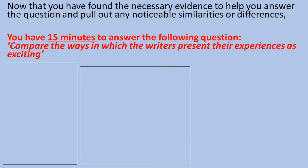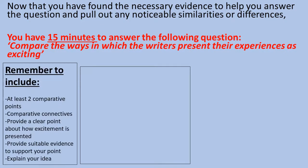So now that you've found the evidence, I'd like you to spend 15 minutes answering the following question: Compare the ways in which the writers present their experiences as exciting. Hopefully you've already written it down; if not, do that now. Remember to include at least two comparative points — three will be perfect, but two is fine. Use comparative connectives, provide a clear point about how excitement is presented, and provide suitable evidence to support and explain your idea properly.